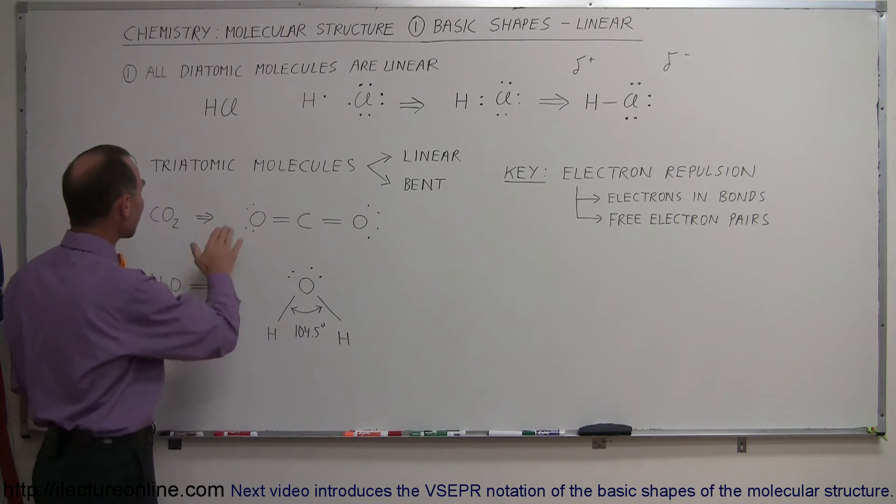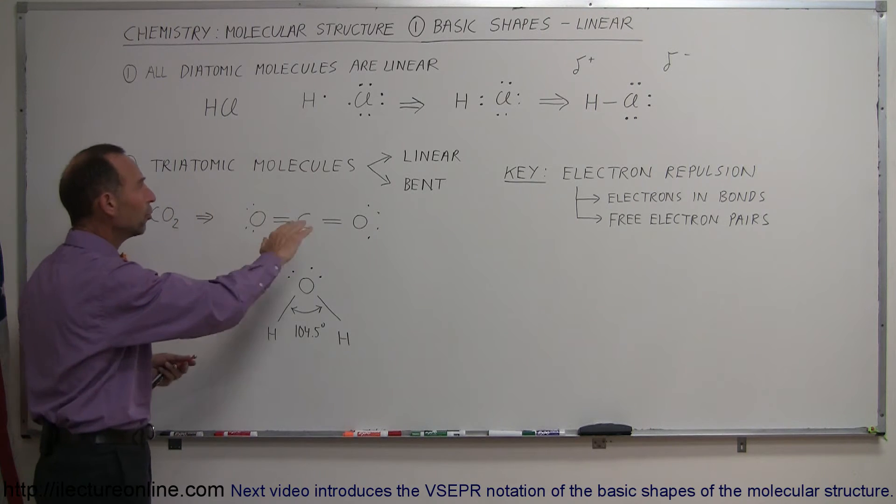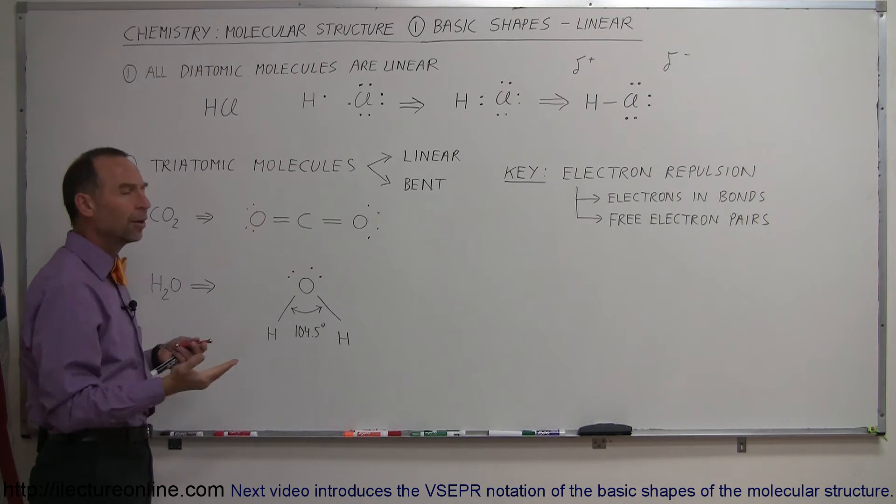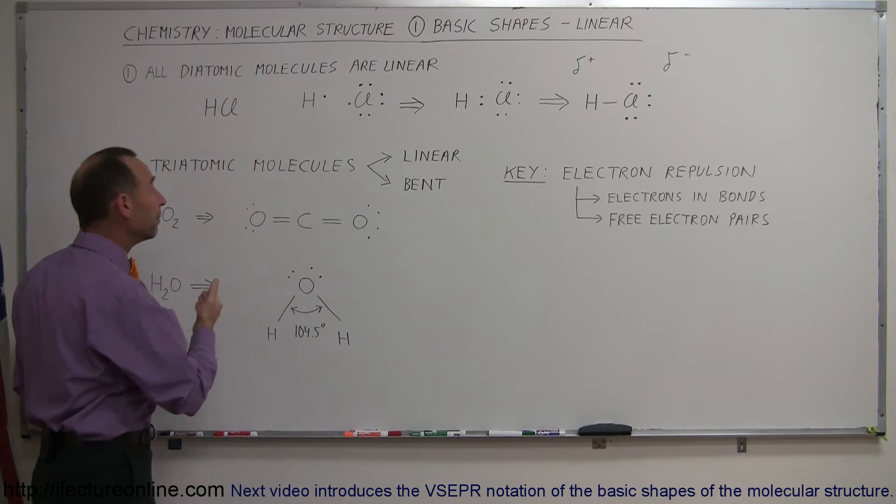When we get to a triatomic molecule they can also be linear, but they can also be bent. So what makes the difference? How do you get a linear molecule and how do you get a bent molecule when you have a triatomic molecule?